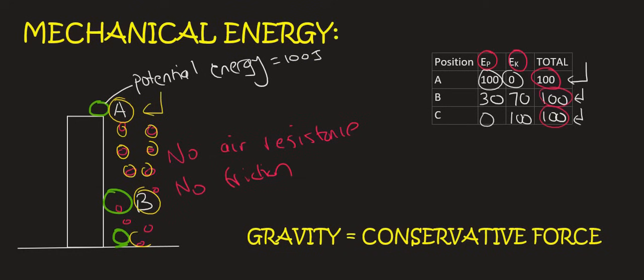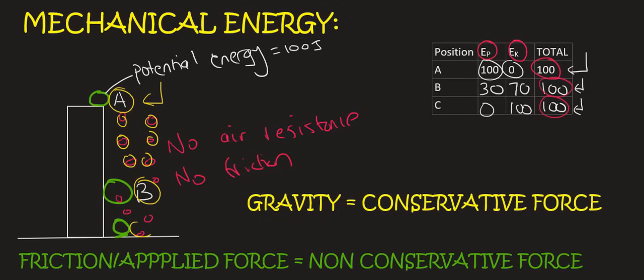If you have friction or air resistance, then that number, the 100, changes. And so, those types of forces are called non-conservative. There we have it. Friction and applied force, that's called non-conservative, because it doesn't conserve the energy.